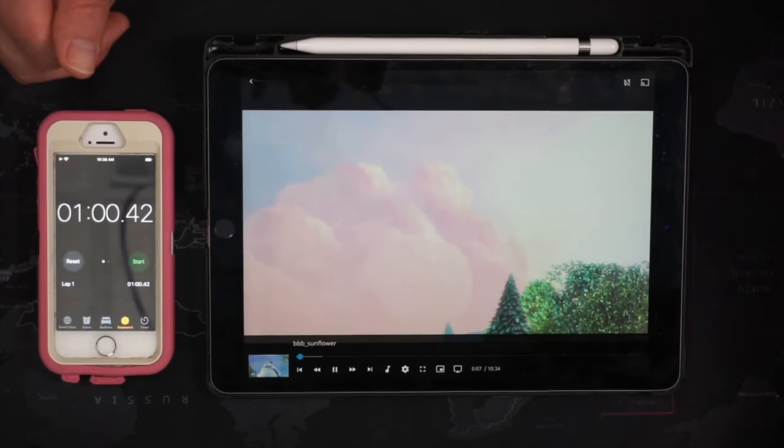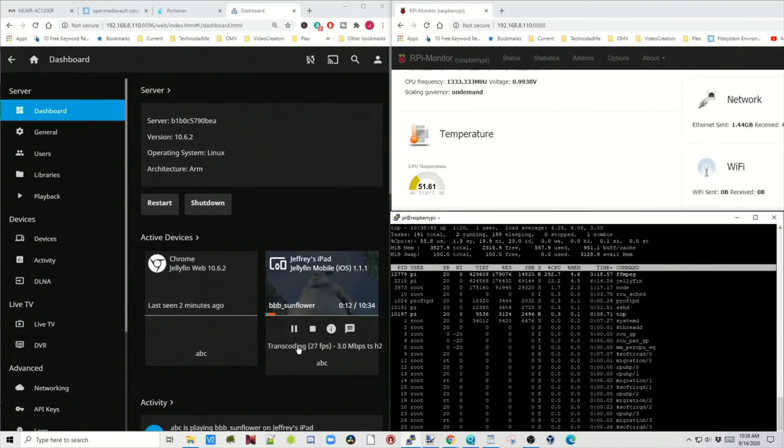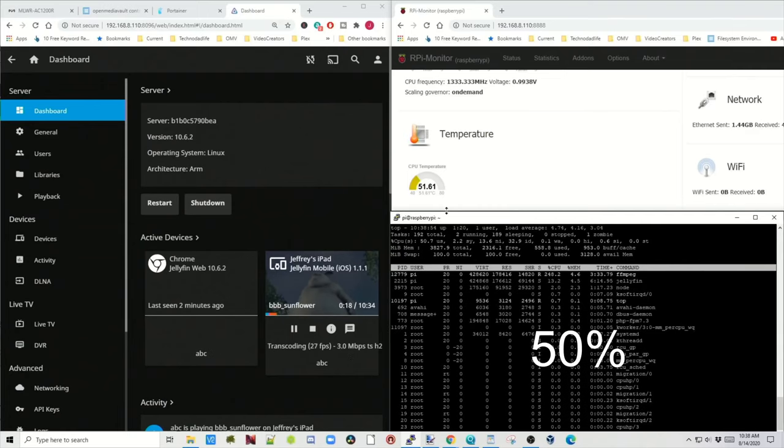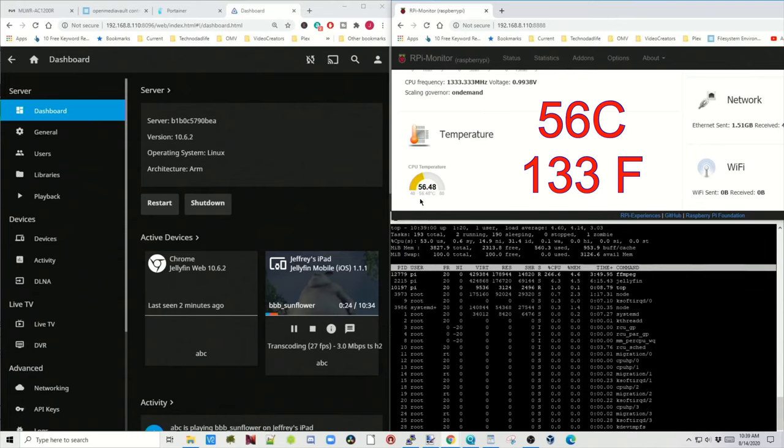It took about a minute for it to start transcoding that. If we go back to our desktop, we can see there it's transcoding 3 megabits per second. CPU usage is about 50% and our temperature has gone up to 56 degrees.